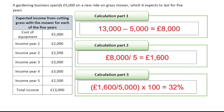Now, is 32% good? Well, it depends on what the other options are. If we've got other equipment options, maybe one might give us a higher average rate of return. And maybe the objective of the entrepreneur or owner is higher than 32%, so it wouldn't be meeting that objective. It just depends on the context.